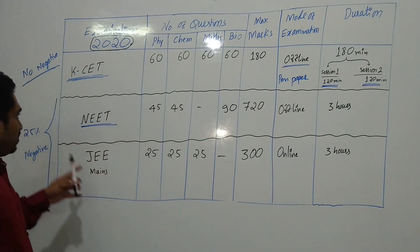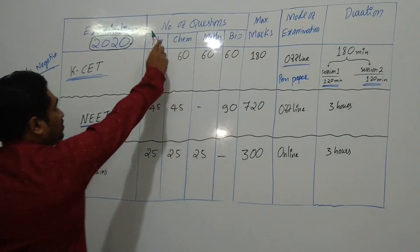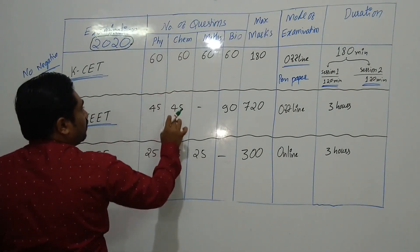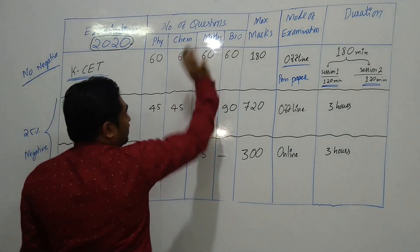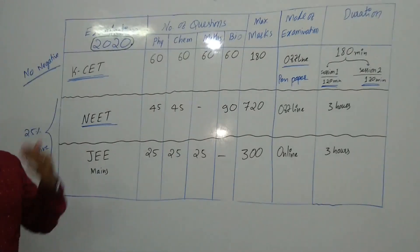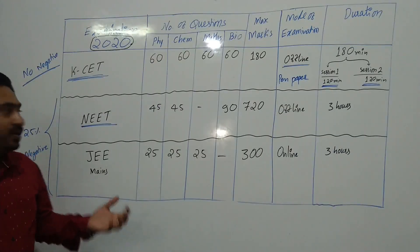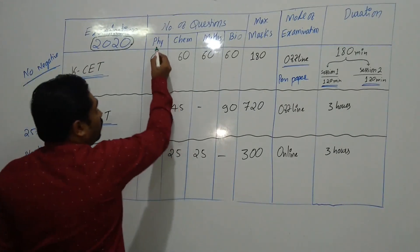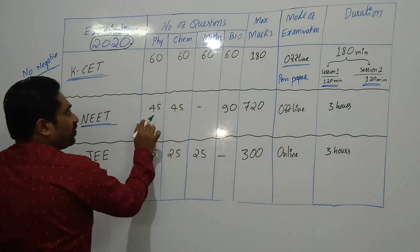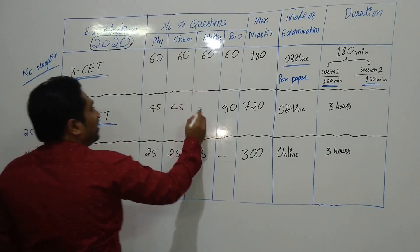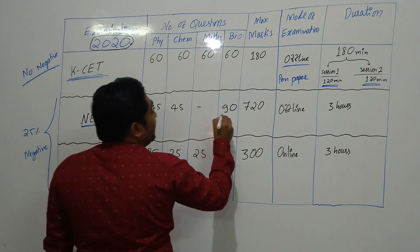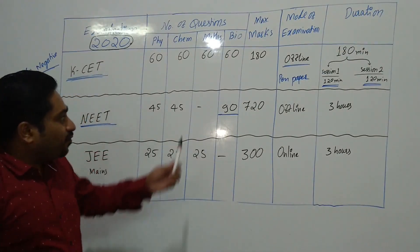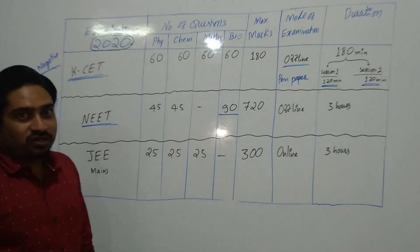Next is the NEET examination. The total number of questions is 45 from physics, 45 from chemistry. NEET does not contain mathematics because it is only for students interested in the medical field. There are 90 questions from biology, which is divided into two parts: botany and zoology — 45 questions from botany and 45 from zoology.